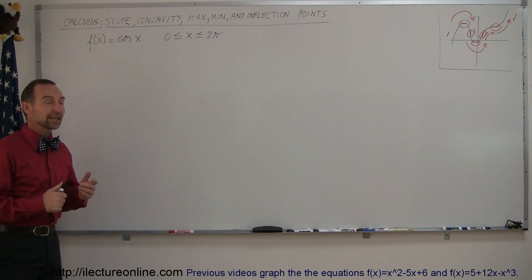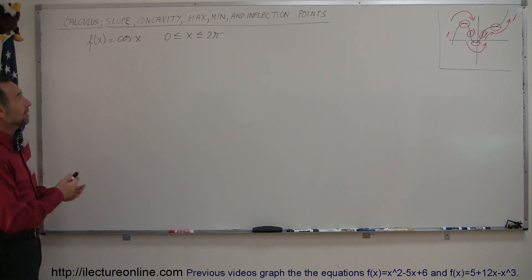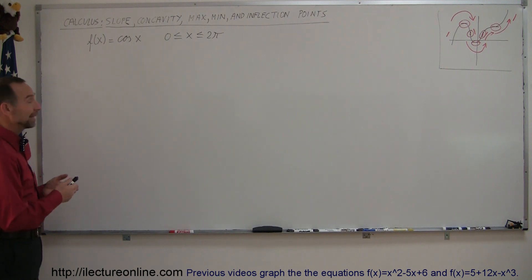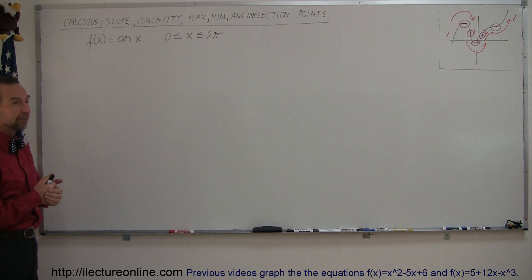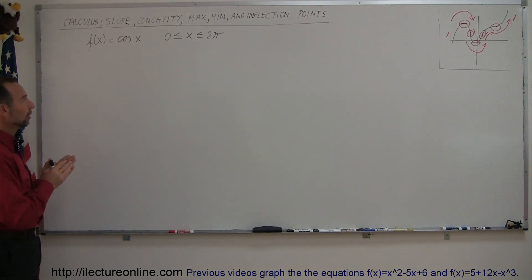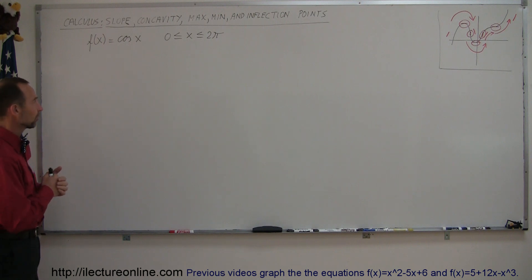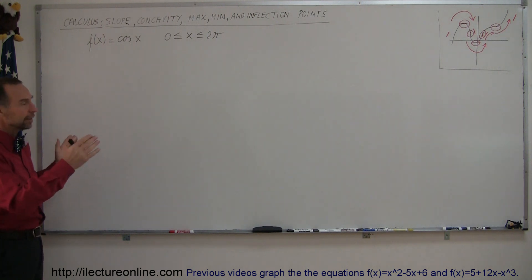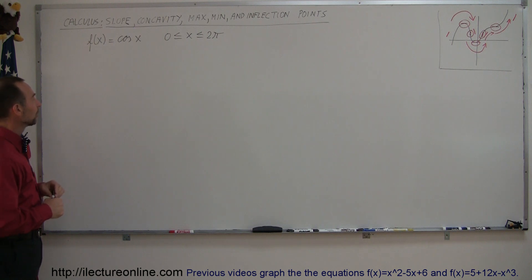Welcome to iLecture Online. Here we're going to find the slope, concavity, the max, the mins, and inflection points of a function. In this case we're going to use a trigonometric function f of x equals the cosine of x, and we're going to limit ourselves to the region for x between 0 and 2π, which is a complete circle, 360 degrees. We could go beyond a little bit, but at least let's limit ourselves to about that region.